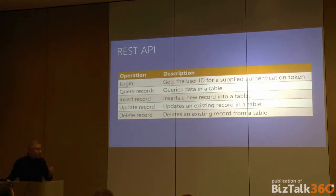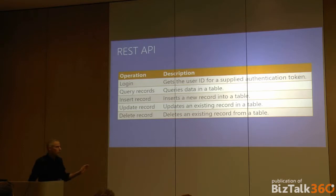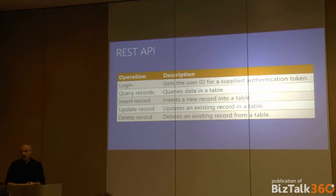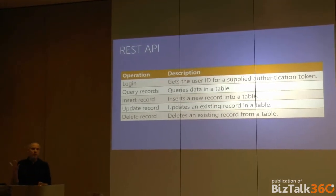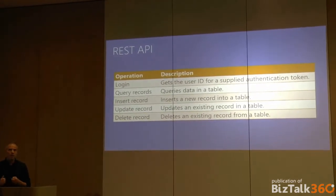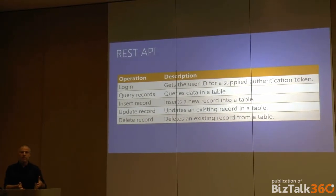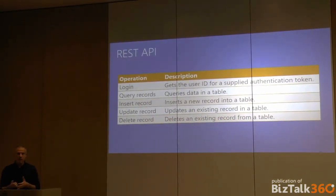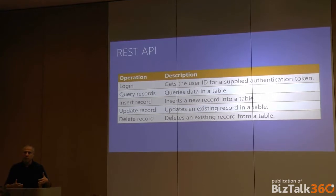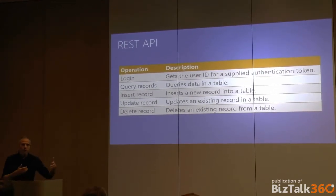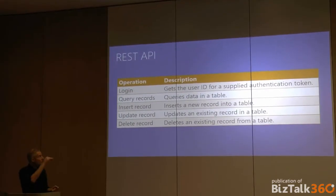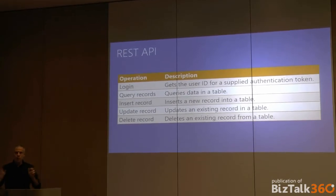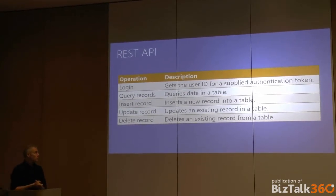The only thing you need to interact with a mobile service is the REST API shown on this slide. There are five operations: one is login, if you want to make an application that requires users to authenticate — you don't need to create your own authentication mechanism; you can rely on Facebook, Twitter, LiveID, and Google. And the four CRUD operations: query, insert, update, and delete.